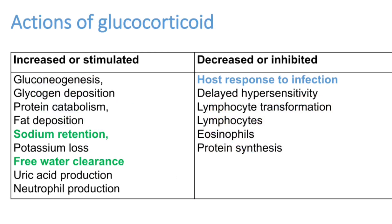Now we will see the actions of glucocorticoids. It increases the stimulation of some processes in our body and decreases or inhibits others. Important actions of cortisol are that it produces sodium and water retention — so sodium and water control is mainly by the cortisol hormone. And it decreases or blocks the immunity of a person; the host response to infection will be blocked by cortisol. These are two main actions we should know when talking about corticosteroid as a therapy.